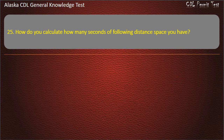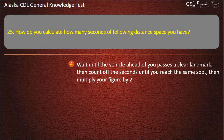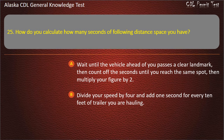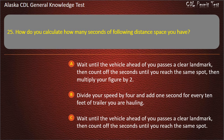Question 25. How do you calculate how many seconds of following distance space you have? Wait until the vehicle ahead of you passes a clear landmark, then count off the seconds until you reach the same spot. Answer: Wait until the vehicle ahead of you passes a clear landmark, then count off the seconds until you reach the same spot.